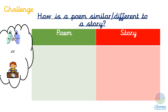If you finished your activity and it was a bit easy for you, there's a challenge on the website attached to the identifying features of a poem worksheet: how is a poem similar or different to a story? Have a discussion with your grown up, or write it down, or do both — write down your ideas in a table with 'poem' on one side and 'story' on the other, noting similarities and differences.